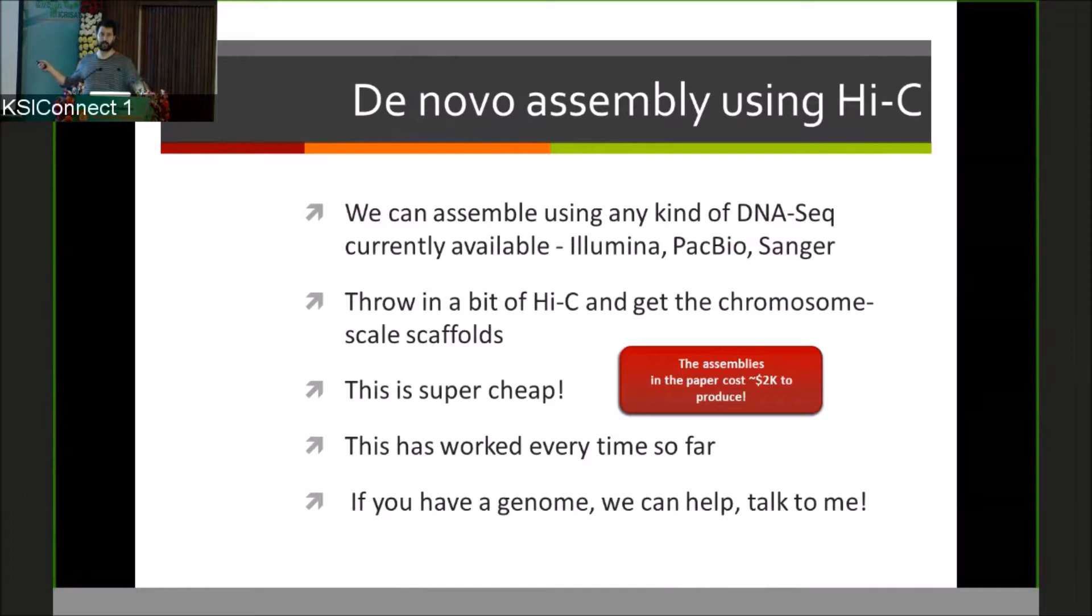I want to highlight, we can now assemble any kind of DNA-seq data currently available. Illumina, PacBio, Sanger, you throw in some Hi-C and a lot of algorithms and computation analyses, you get chromosome scale scaffolds. This is actually really cheap. It worked every time so far. And if you have genomes, you can talk to us. I want to highlight that this Science paper - remember, the very first big genome assembly papers that appeared in Nature and Science cost three billion dollars. This paper cost us less than two thousand dollars worth of sequence data. It was all algorithms and computation to assemble these two mosquito genomes.